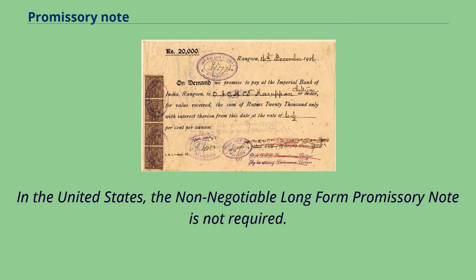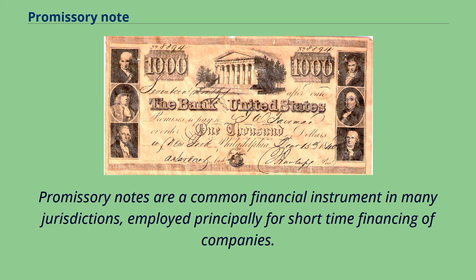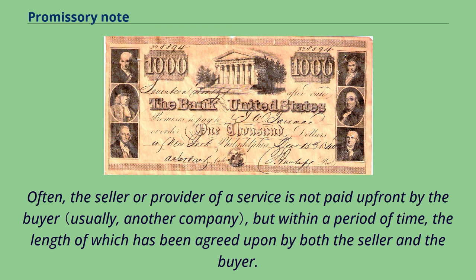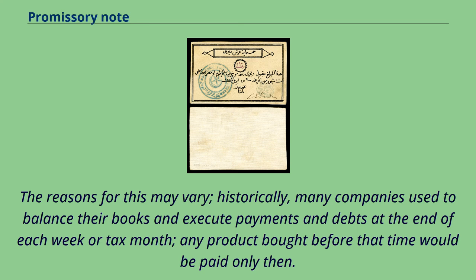In the United States, the non-negotiable long-form promissory note is not required. Promissory notes are a common financial instrument in many jurisdictions, employed principally for short-time financing of companies. Often, the seller or provider of a service is not paid up front by the buyer, but within a period of time agreed upon by both parties. Historically, many companies used to balance their books and execute payments and debts at the end of each week or tax month, and any product bought before that time would be paid only then.